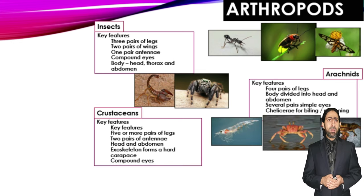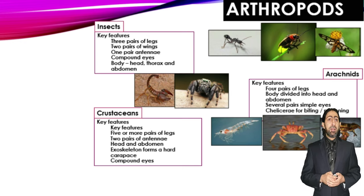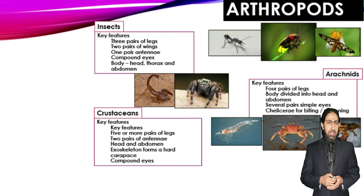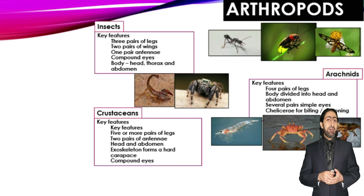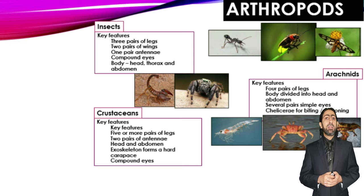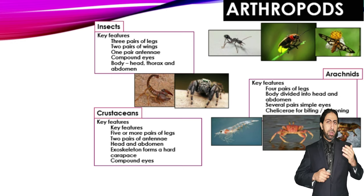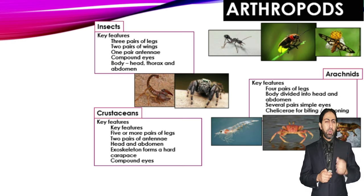For crustaceans, the main features include five or more pairs of legs, which is why they are known as decapoda — 'deca' means ten and 'poda' means leg. They have two pairs of antennae, very obvious in crabs and shrimps. The head and thorax are fused into a cephalothorax, and they have a hard exoskeleton called a carapace with compound eyes mostly on short stalks.